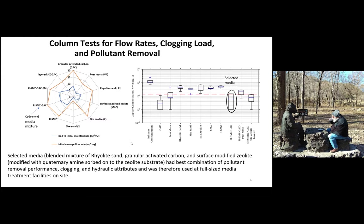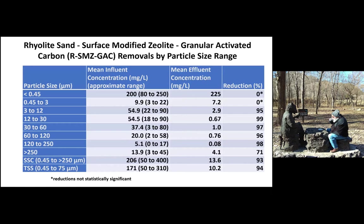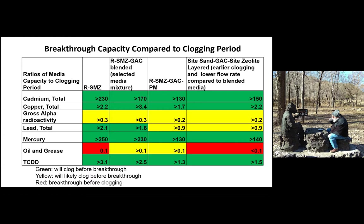We used this material at the full-size media facilities at the site. Boeing has also used this at some of their other facilities. Our test results with this media indicate good ability to retain particulates down to small size fractions found in stormwater, which is typically the goal since most pollutants are associated with particulates. We see quite good removal down to about 3 microns, and more importantly, our effluent concentrations are very low — our main goal versus percent reduction.